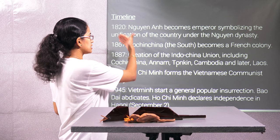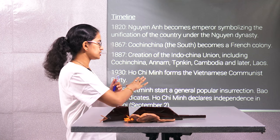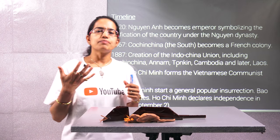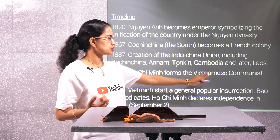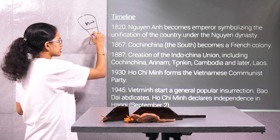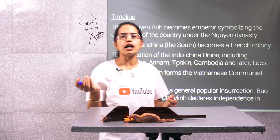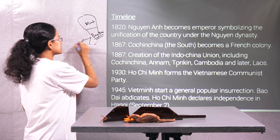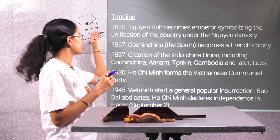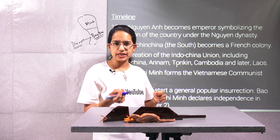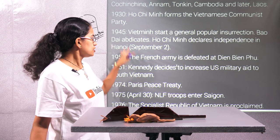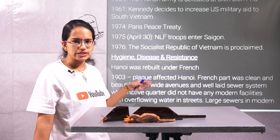Here we have the timeline — how things started in 1820 with the creation of Indochina. Ho Chi Minh was one of the major leaders who led the independence of Vietnam and its later unification. His party was known as the Vietnamese Communist Party. On the map of Vietnam, North Vietnam was under Ho Chi Minh and South Vietnam was under Bao Dai, who was a puppet ruler under the French government. Bao Dai was later replaced by Diem, who was a very repressive and autocratic ruler. These developments led to the National Liberation Front (NLF) and finally the unification of Vietnam.